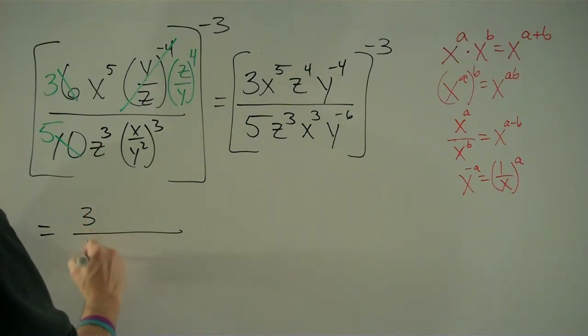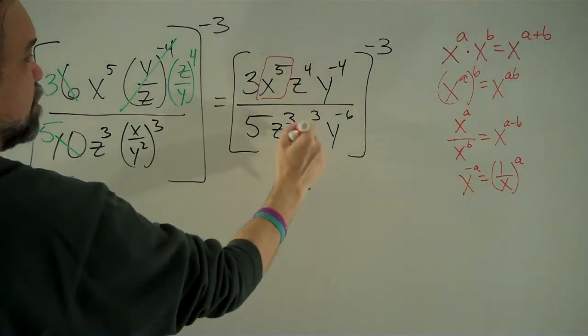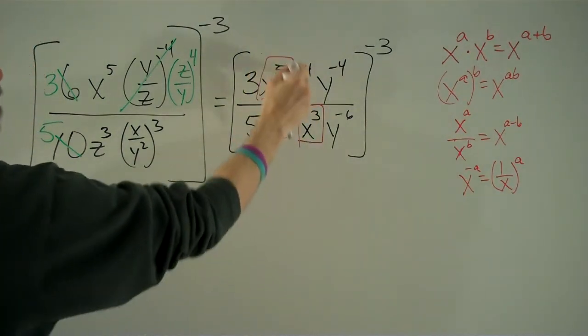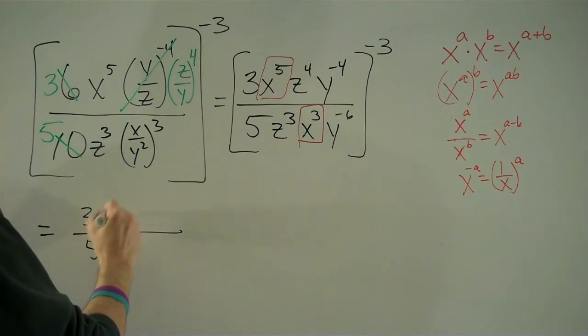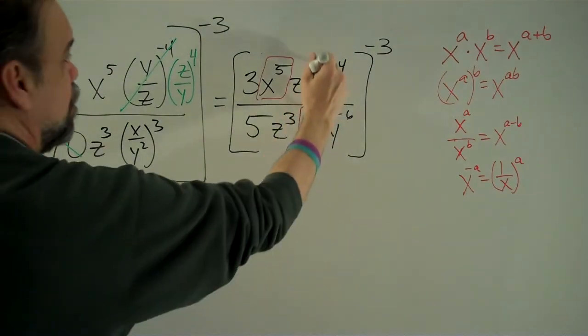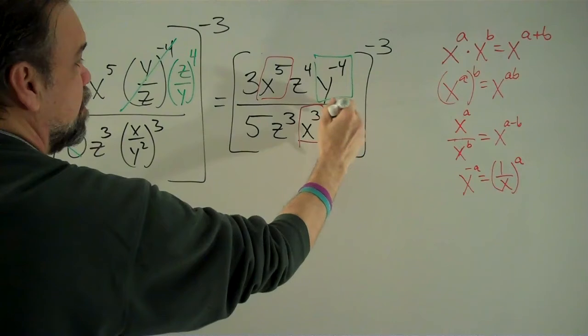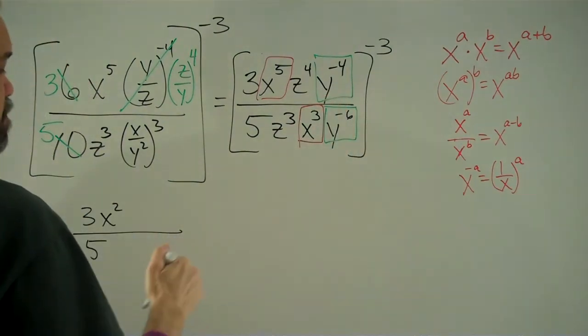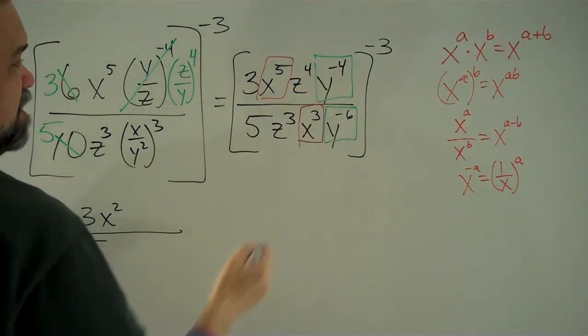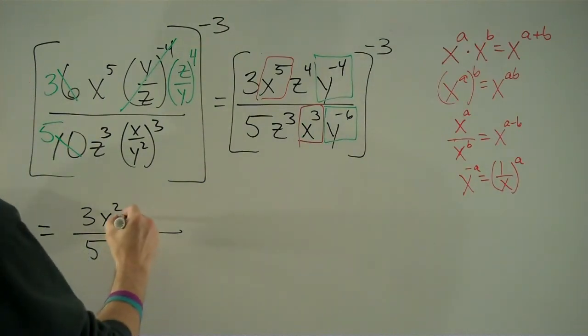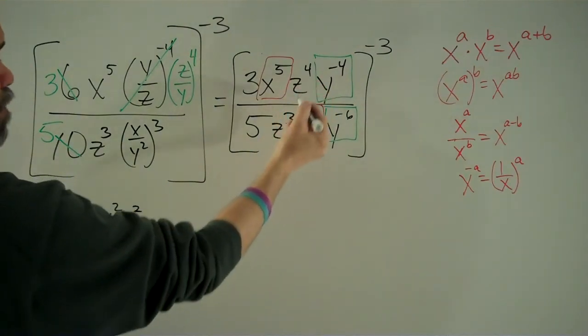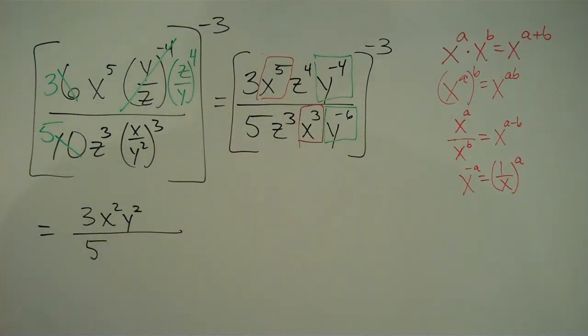We've got 3 over 5. We have x to the fifth over x cubed. That's x to the 5 minus 3, which is just x squared. We have y to the negative fourth over y to the negative 6. That's y to the negative 4 minus negative 6, which is negative 4 plus 6, so y to the second. And then we have z to the fourth divided by z cubed. That's z to the 4 minus 3, which is just z.